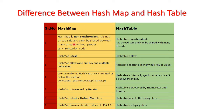The first difference between HashMap and HashTable is that HashMap is non-synchronized, meaning it is not thread-safe and cannot be shared between many threads without proper synchronization code. Not thread-safe means that at the same time, multiple threads can access or work on a HashMap. HashTable is synchronized, meaning it is thread-safe and can be shared with many threads.